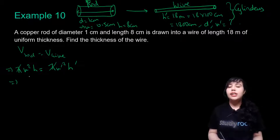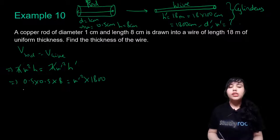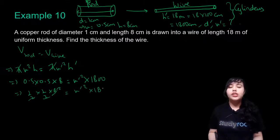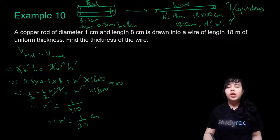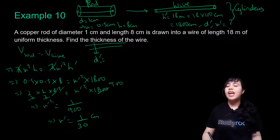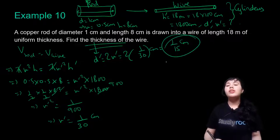Substituting: 0.5 × 0.5 × 8 = r′² × 1800. Writing 0.5 as 1/2: (1/4) × 8 = r′² × 1800, giving 2 = 1800 r′². Simplifying: r′² = 1/900. Taking square root: r′ = 1/30 cm. Since thickness refers to diameter: d′ = 2r′ = 2 × (1/30) = 1/15 cm. The thickness of the wire is 1/15 centimeters.